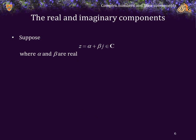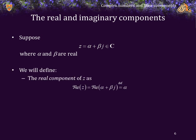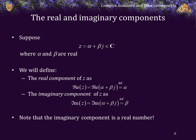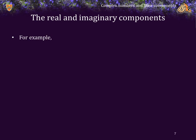Suppose that z is a complex number of the form alpha plus beta j, where alpha and beta are real. We define the real component of z as being alpha, and the imaginary component of z as being beta. It's important to note that the imaginary component is a real number — it is beta, not beta j. For example, if z equals 3.2 minus 5.7j, then the real part of z is 3.2 and the imaginary part of z is negative 5.7.